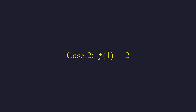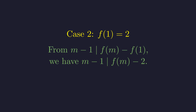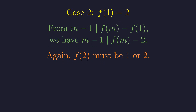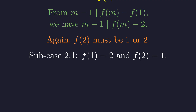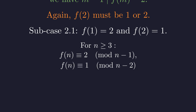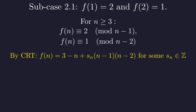Now we move to the second major branch, where f(1) = 2. The divisibility condition tells us that m minus 1 must divide f(m) minus 2, and f(2) must still be either 1 or 2. Let's first explore what happens if f(2) = 1. From the divisibility conditions, f(n) is congruent to 2 modulo n−1 and congruent to 1 modulo n−2. The Chinese remainder theorem gives us the parametric form: f(n) = 3 − n + s_n · (n−1)(n−2).